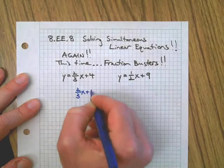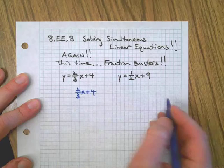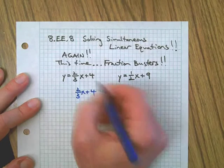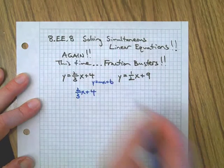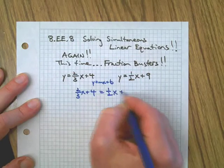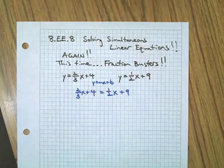So you start off with two equations like that, two linear equations in y equals mx plus b form, right? Slope intercept form. And you set them equal to each other because that's the first thing you're taught to do.